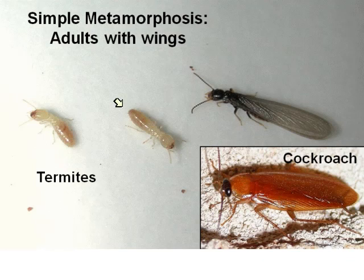Termites are another well-known insect with simple metamorphosis. Despite the coloration and lack of wings, in terms of body shape and mouth part type, the young termite looks an awful lot like the adult, with the same kind of chewing mouth parts on both. Cockroaches are very similar — the same basic body shape, except the adult has wings and reproductive parts, but otherwise looks fairly similar.